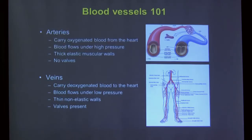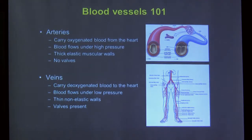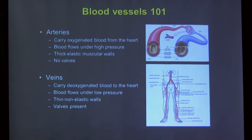Arteries are the blood vessels that carry oxygenated blood from the heart. Blood flows under high pressure within the arteries, which have thick elastic walls and no valves. Veins, depicted in blue in most drawings, carry deoxygenated blood back to the heart. Veins rely on your muscles to push blood back, flow under low pressure, are thin-walled and non-elastic, and do have valves — which becomes important when we discuss venous dysfunction.